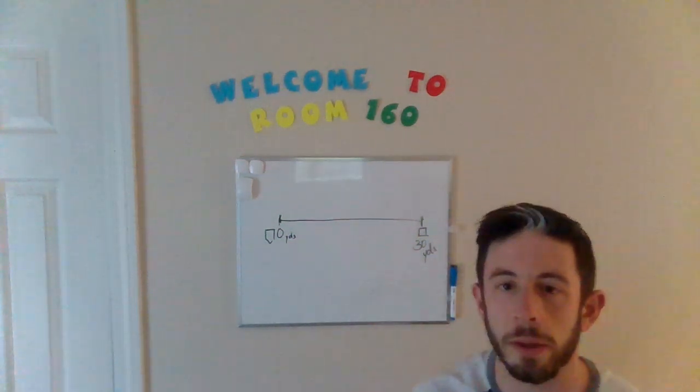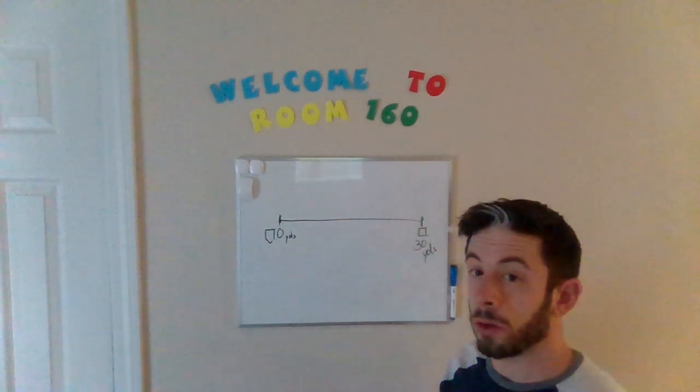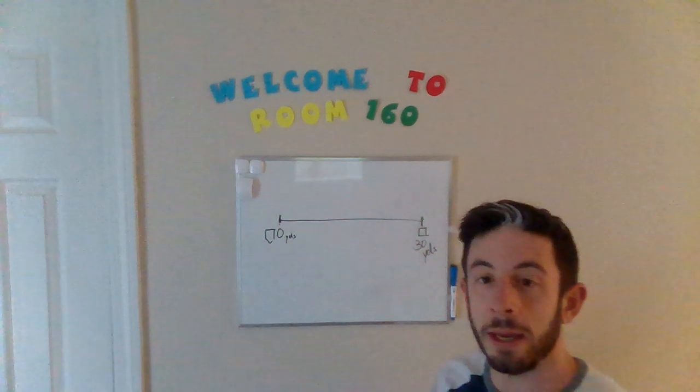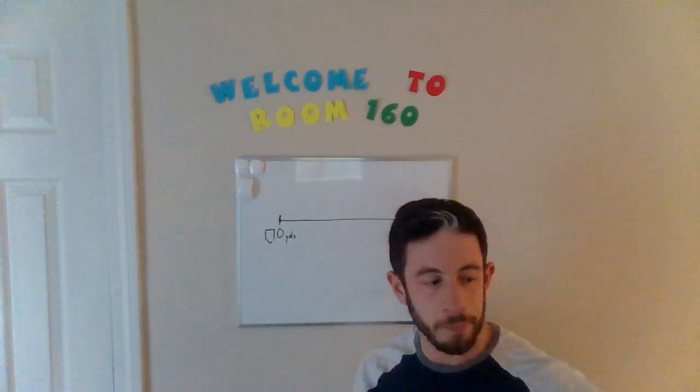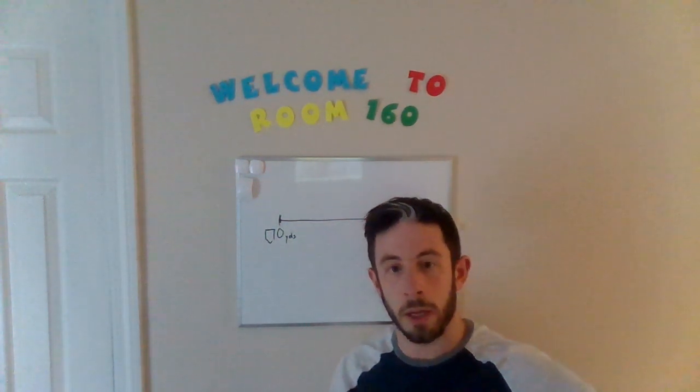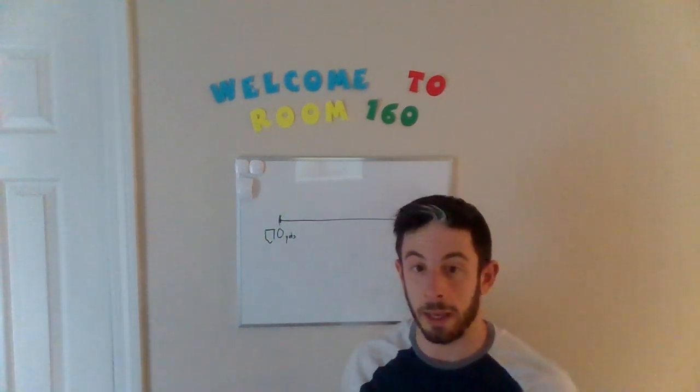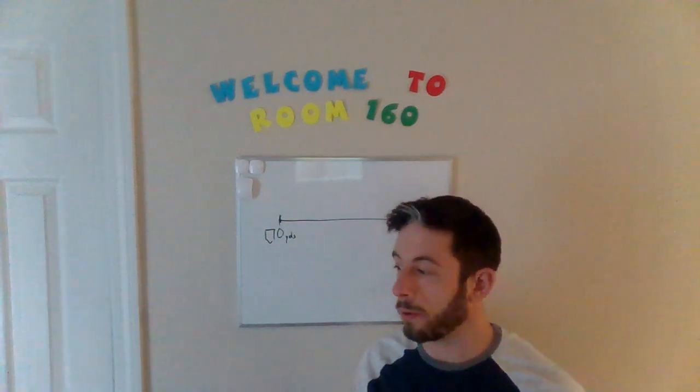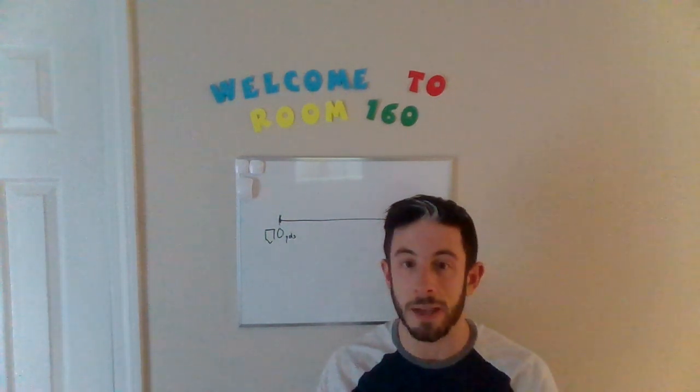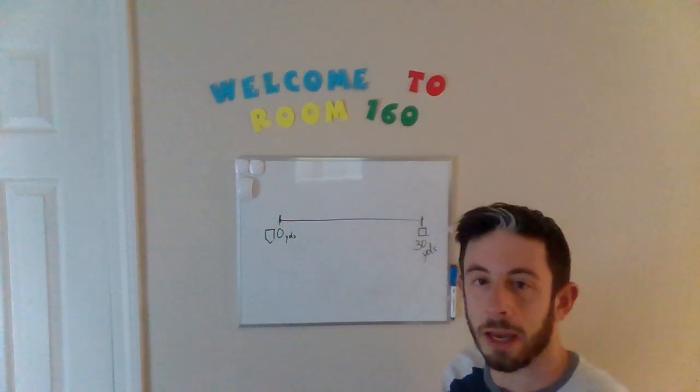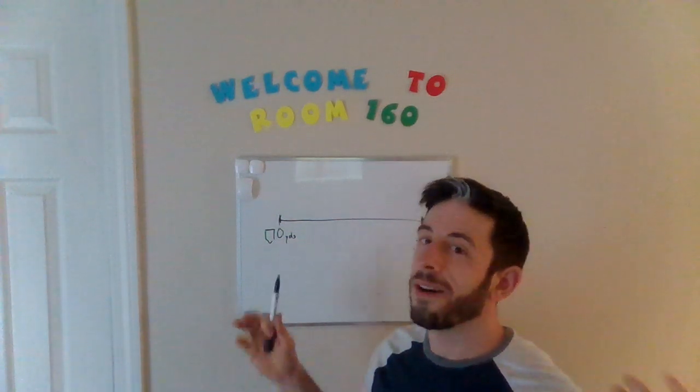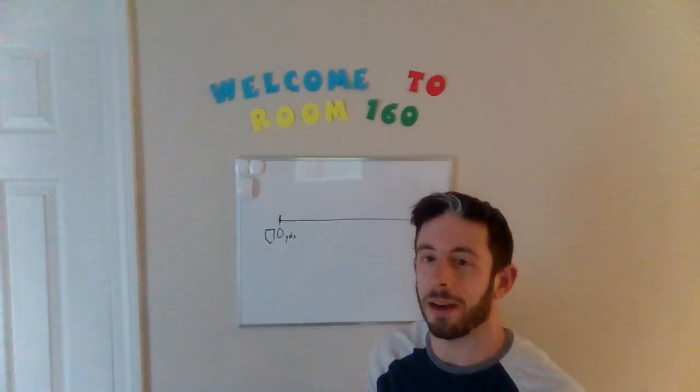So we start with a number line. A number line can show the distance from point A to point B. We can use a number line to represent the passage of time, how far away something is from another thing, or to help us add and subtract. In this case, we're using a number line to show fractions. So that's why this is a little bit trickier.